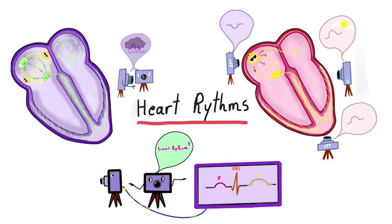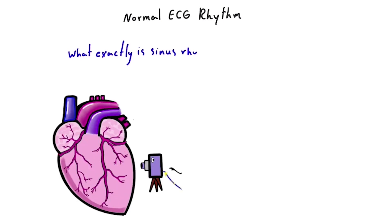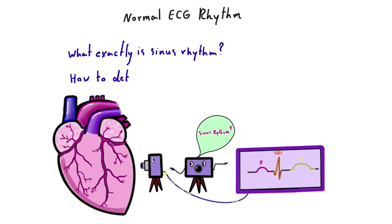The most essential feature of a normal ECG is its rhythm, which should be sinus rhythm. This naturally raises a couple of key questions. What exactly do we mean by sinus rhythm? And how can we identify, in the simplest way, whether a heart rhythm is truly sinus or not?